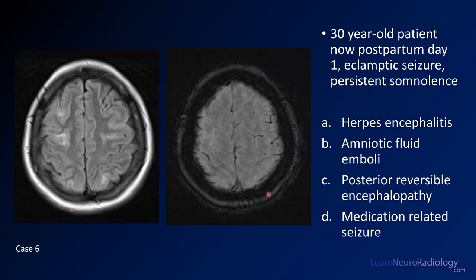Case number six is a 30-year-old patient, postpartum day one, with eclampsia and somnolence. We have two images — a FLAIR and blood-sensitive imaging, or GRE. Your choices are herpes encephalitis, amniotic fluid emboli, posterior reversible encephalopathy (PRES), or medication-related seizure.